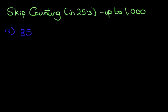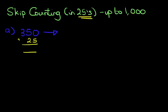Suppose we have this number — we've got 350. What number comes after 350 if we are counting in 25s? Well, what we do is we simply add 25 to the number. Start with the units: 0 plus 5 is 5. The tens: 5 plus 2 is 7. And lastly, the hundreds: 3 plus 0 is 3. The answer is 375.